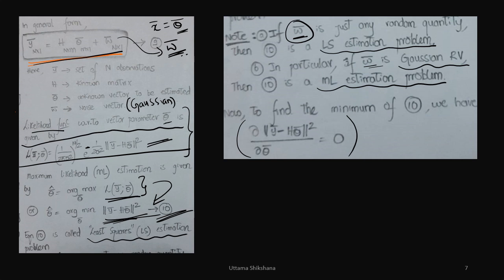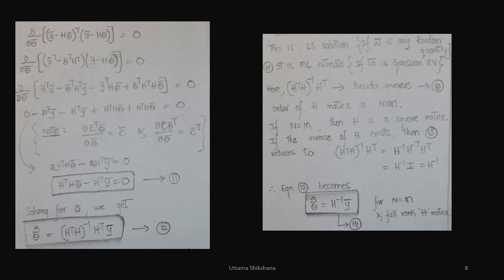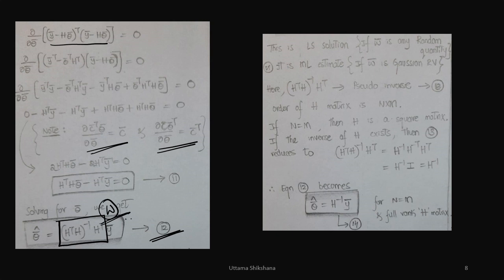To find the minimum of equation 10, we take the partial derivative with respect to theta-bar and equate it to zero. Expanding the norm squared using the required derivative formulas — which are clearly derived step by step in the notes — we finally arrive at equation number 12. This gives us the expression for W.